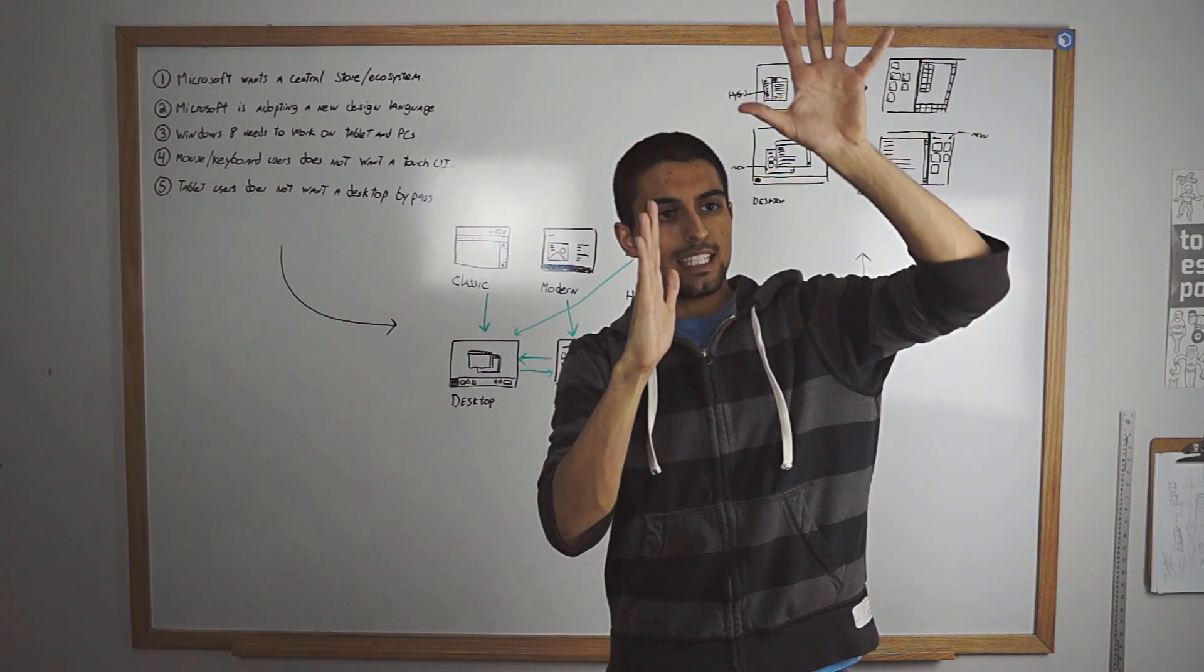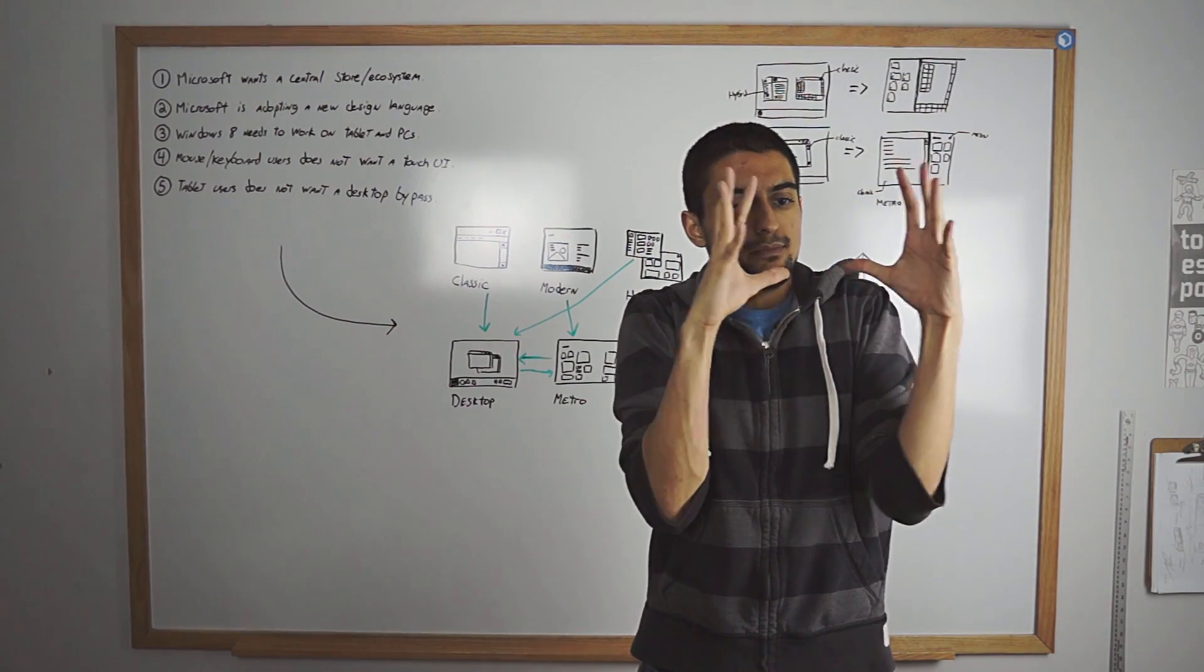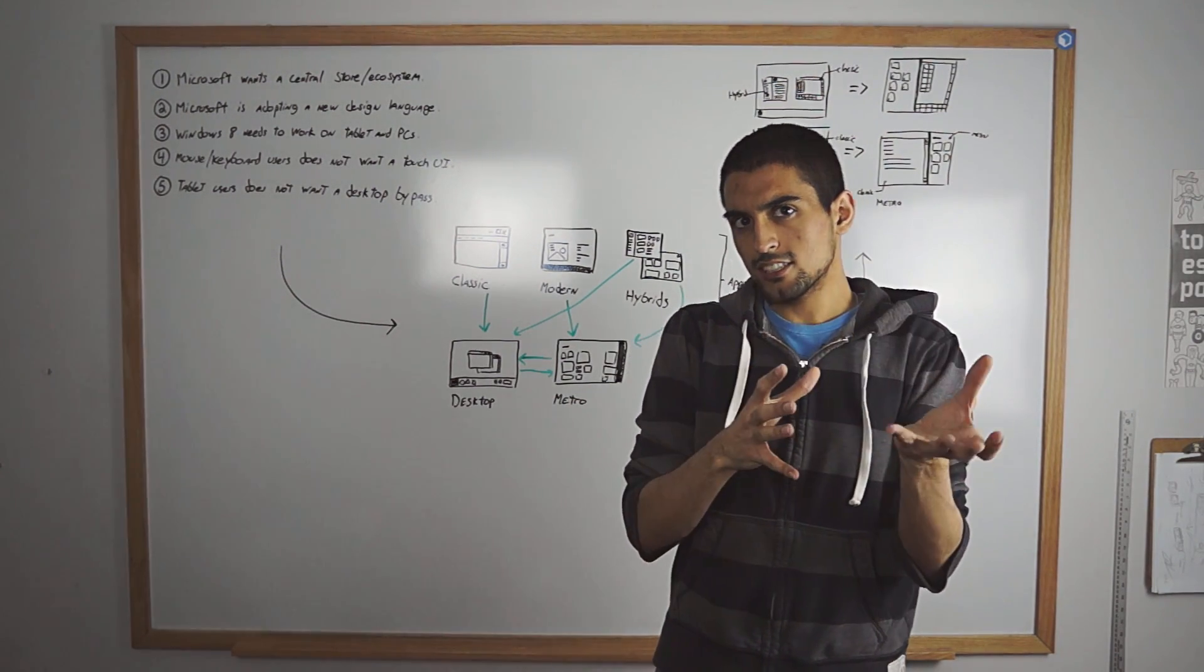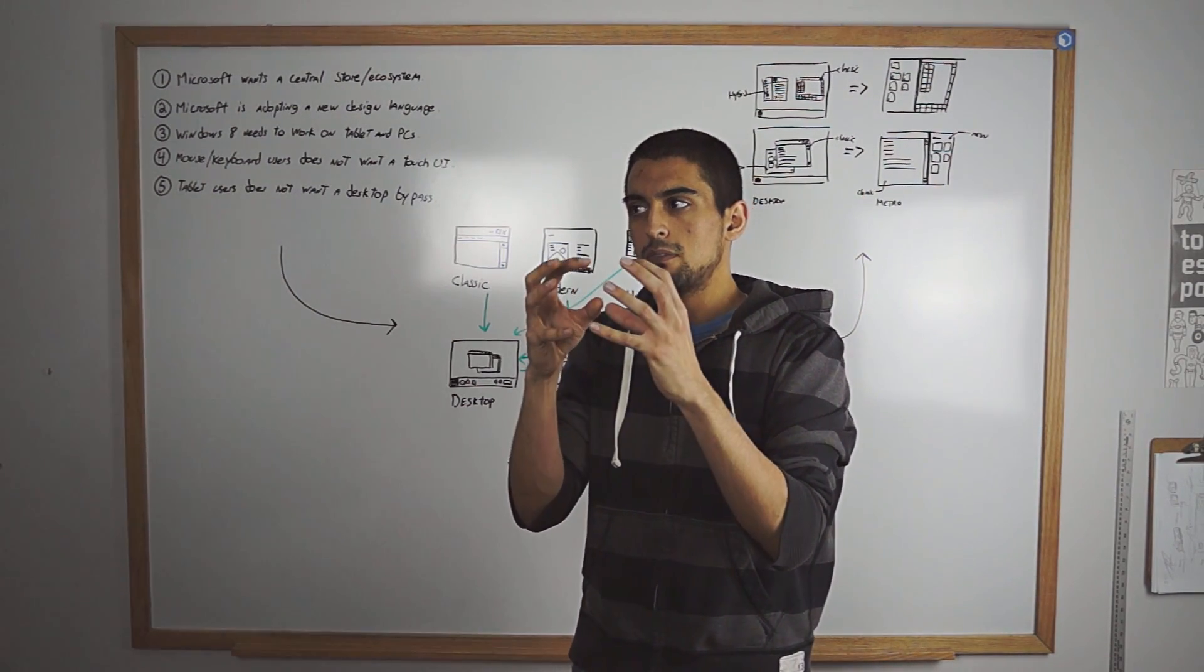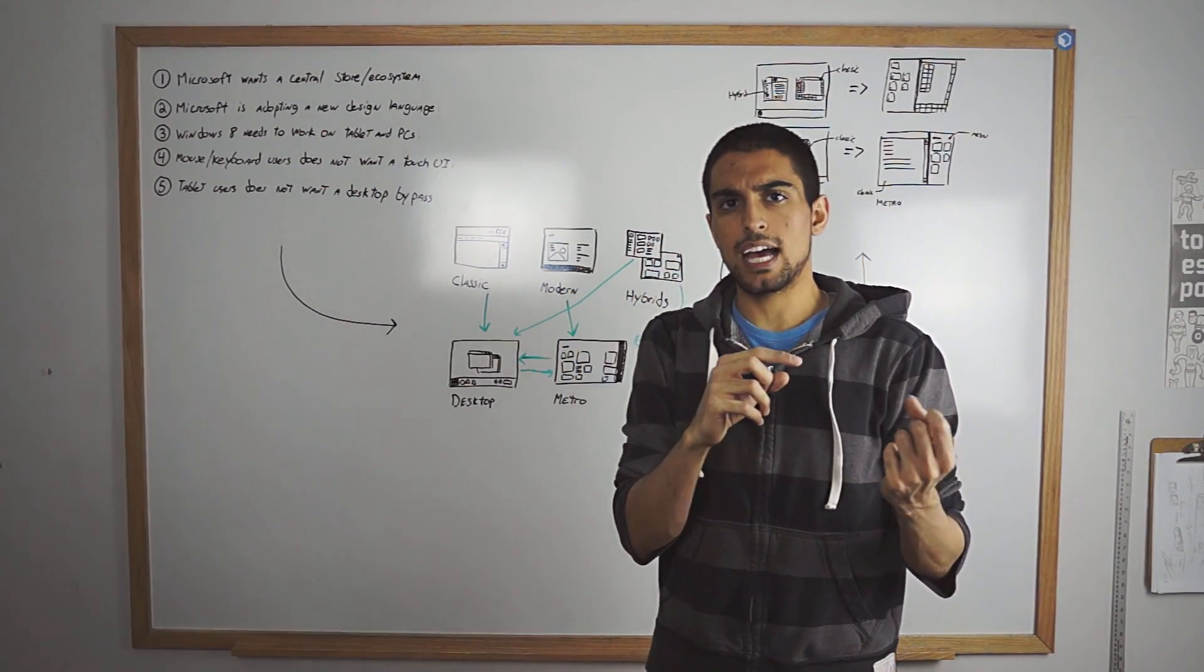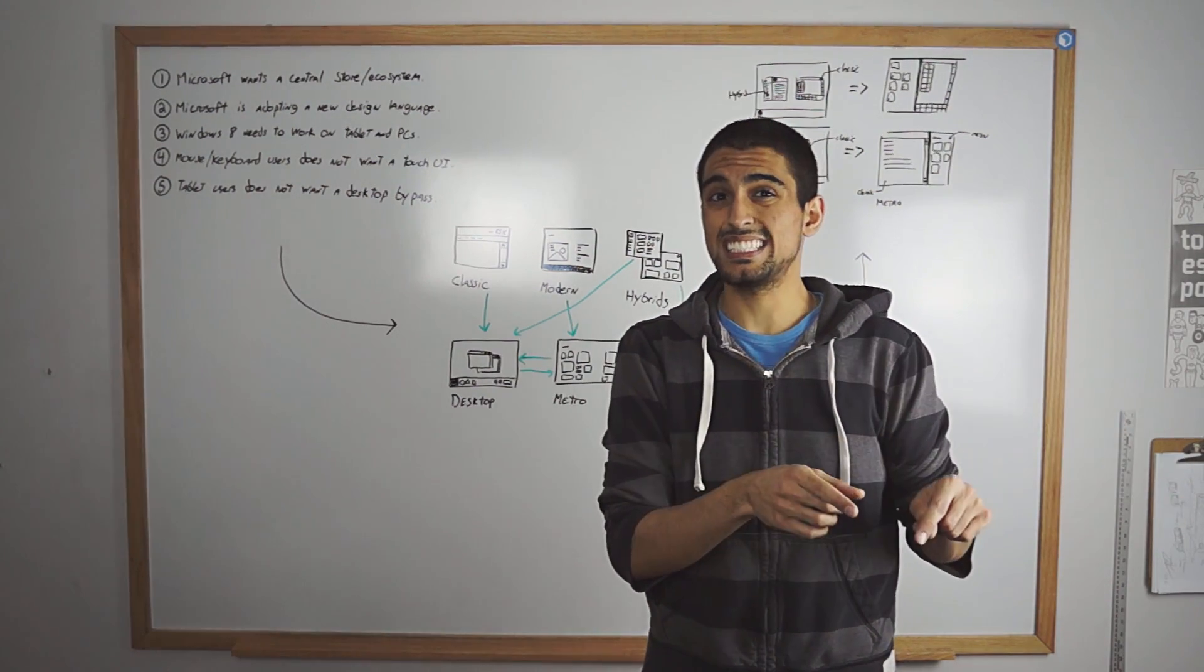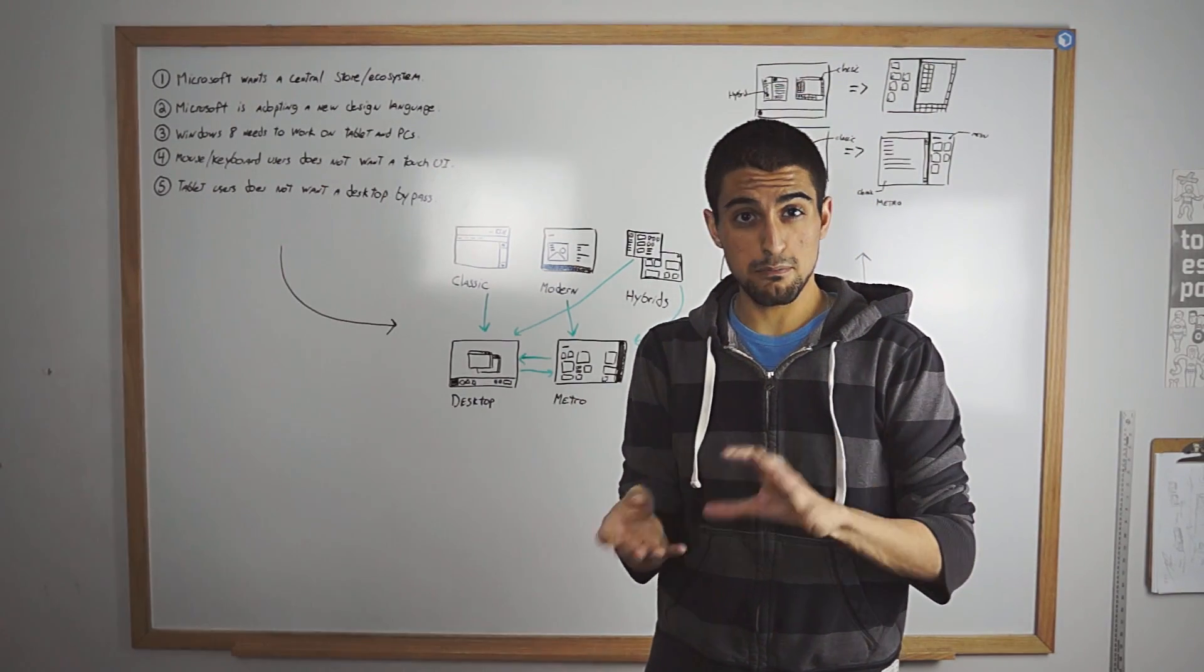But you have half of your screen that is the desktop running six, seven apps if you want on that shared space. And the other half is just one simple music application or Metro application. So the desktop is trying to live inside of the Metro environment. And Metro is basically the dominant environment trying to run the desktop as an app. That's the desktop itself has all those classic apps running inside.